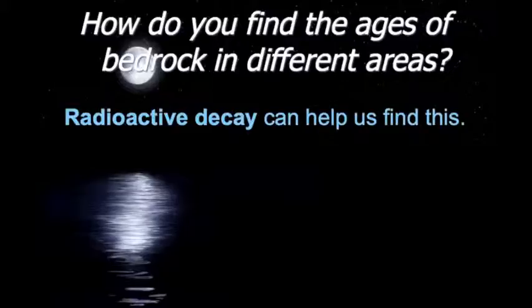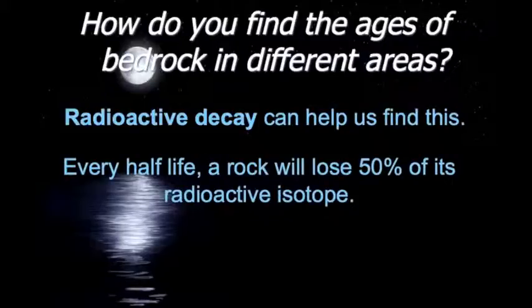Radioactive decay can help us find this. Different isotopes take different amounts of time to decay. They're represented in half-lives. Every half-life a rock will lose 50% of its radioactive isotope.